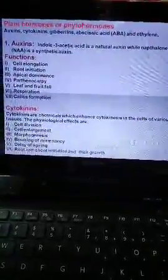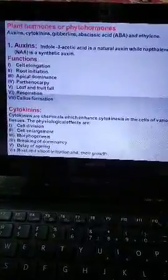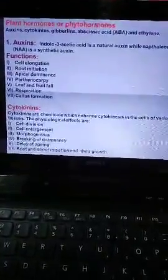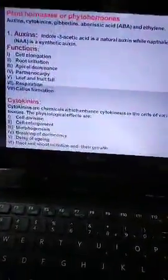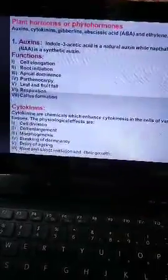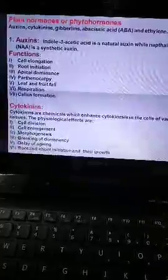The second function is root initiation. It means low concentration of auxin promotes root primarily in unpacked. This is the promotion of roots. The third function is apical dominance. If you remove apical bud, you can remove the lateral bud. This is the root factor or sprout.